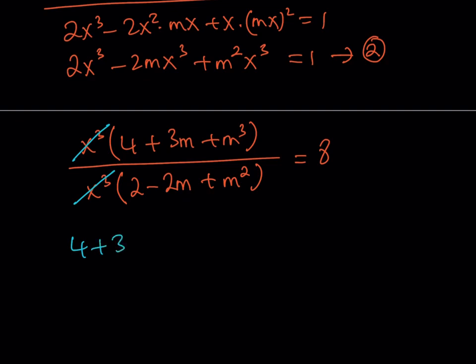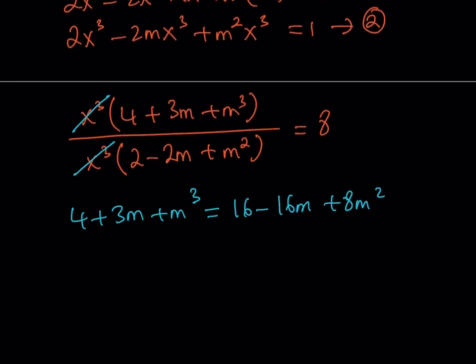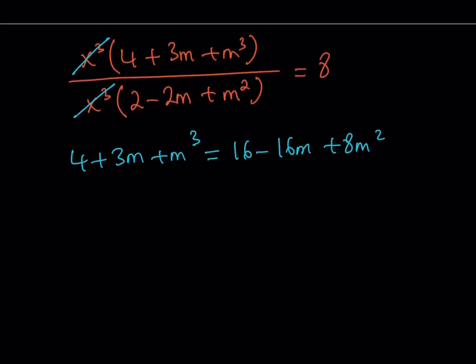So when x³ cancels out, we get a nicer equation. Let's cross multiply. We get 4 + 3m + m³ = 16 - 16m + 8m². Now I'd like to put everything on the same side so I can solve this equation as a cubic. It's still a cubic, but we have one unknown. Notice that x disappears and we end up with m.